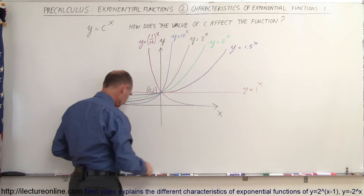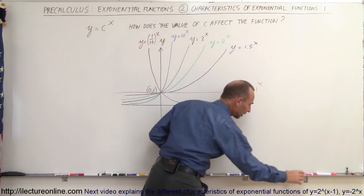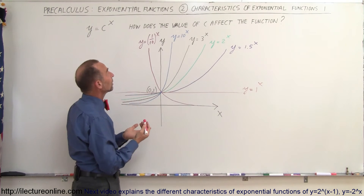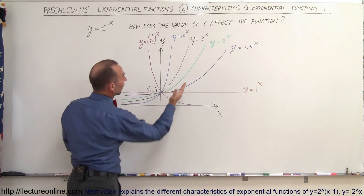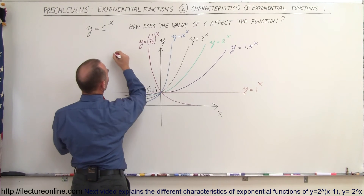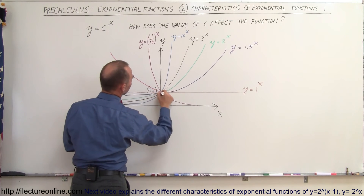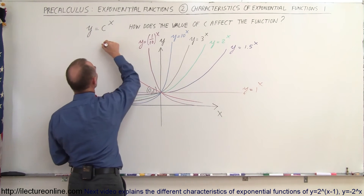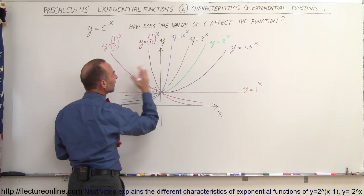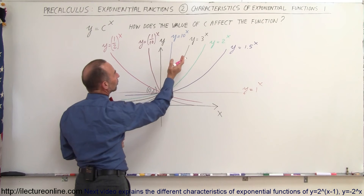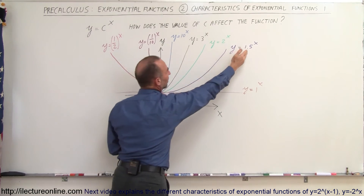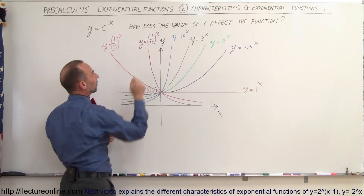Similarly, y equals 1 over 2 to the x power would be the mirror image of y equals 2 to the x power. y equals 1/3 to the x power would be the mirror image of y equals 3 to the x. And y equals 1 over 1.5 to the x power would be the mirror image of the 1.5 curve.